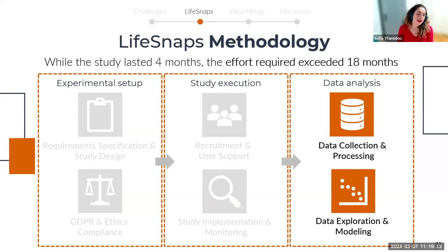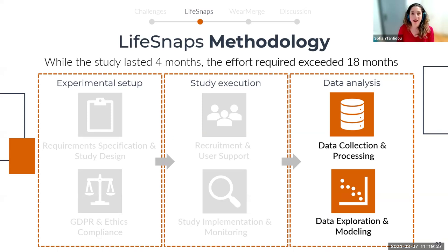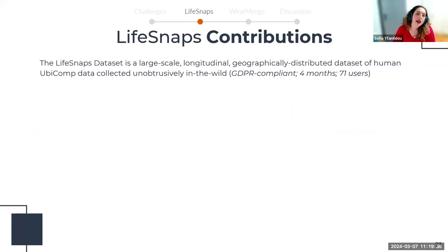We drafted hundreds of visualizations and built many machine learning models to facilitate uptake of the dataset and future research. This was a comprehensive effort encompassing challenges from both the nature of the data and the human factors involved. In detail, the LiveSnaps dataset is a large-scale, longitudinal, and geographically distributed dataset complying with GDPR and approved by the university's ethics committee. We used state-of-the-art anonymization techniques with respect to users' privacy.